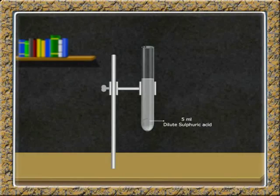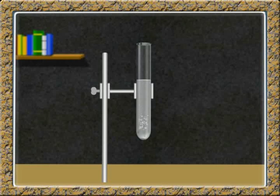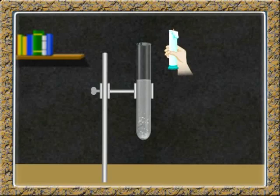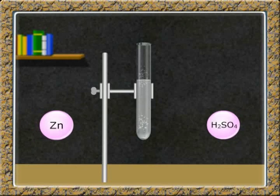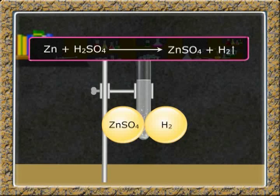Let's move on to the next property by doing an experiment. Take about 5 ml of dilute sulphuric acid and add a few pieces of zinc granules into it. Soap bubbles are formed. Take a burning candle near the soap bubble — it puts off with a pop sound. Zinc reacts with acid and displaces hydrogen gas, reacting with the remaining part of the acid to form a salt, zinc sulphate. The chemical equation is: Zn + H₂SO₄ → ZnSO₄ + H₂.